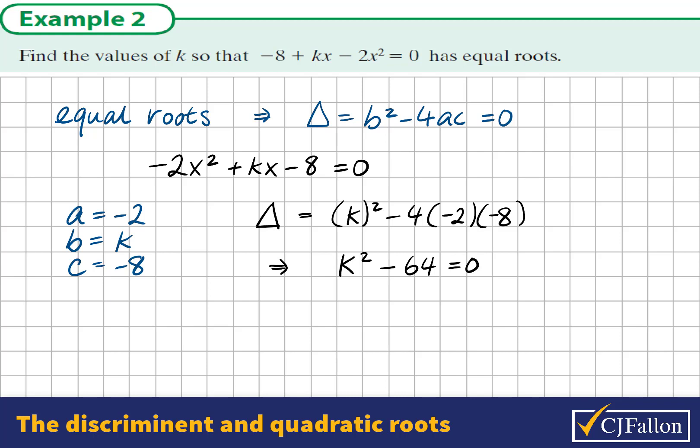But remember, the discriminant equals 0, so that must be equal to 0. Here we have the difference of two squares. The factors are (k - 8)(k + 8), giving solutions that k = 8 or k = -8.